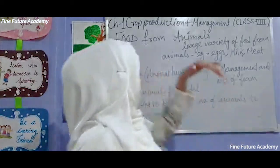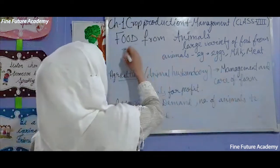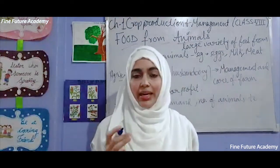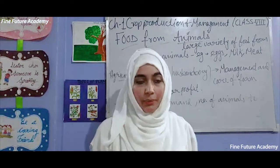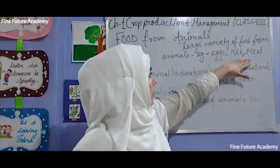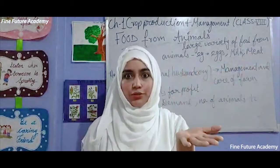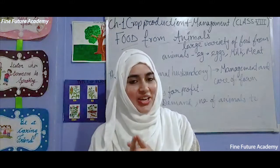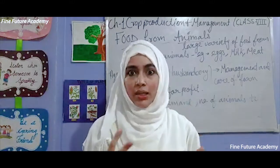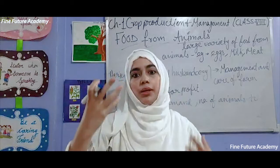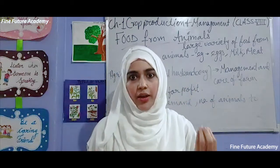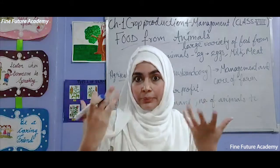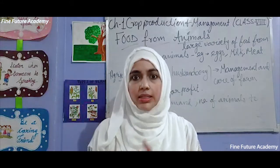Next is food from animals. Everybody knows what food we get from animals — we eat eggs, some people also eat meat, and we get milk also. Milk is very important. So what I am telling you is that milk, eggs, and meat have increased demand. If every person is having milk, eggs, and meat, then demand has increased.